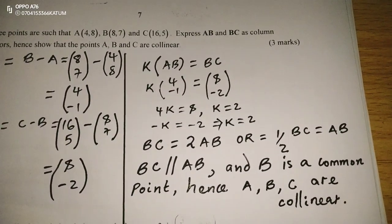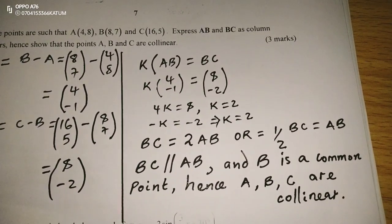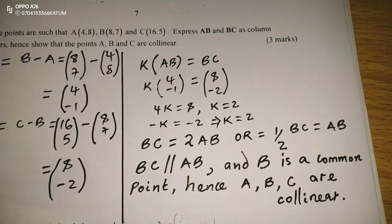Therefore, for points to be collinear, two vectors have to be parallel and sharing a common point.